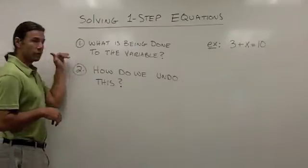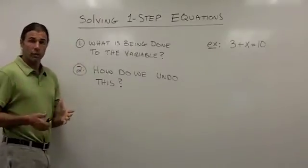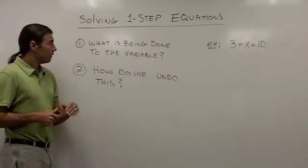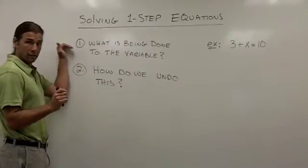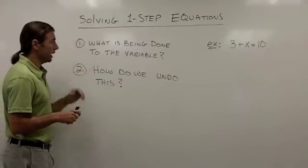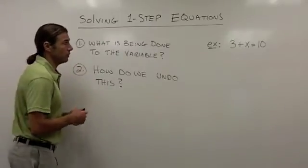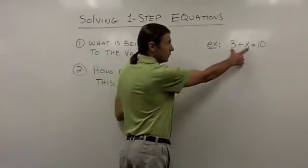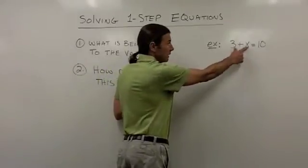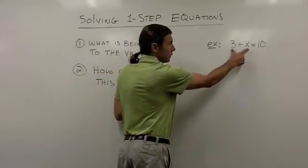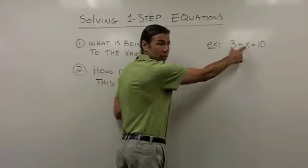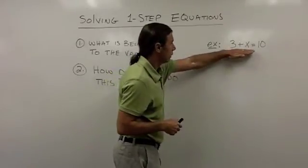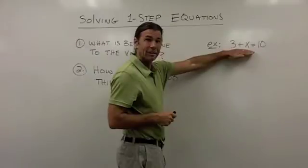These are the two steps we're going to use to solve one-step equations. The first thing we're going to do is ask ourselves: what is being done to the variable? We're going to come back over here to our example. We're looking at the variable side, which is the left side, because that's where x is. So we're asking, what is being done to this variable? Well, the answer is that 3 is being added to x here.